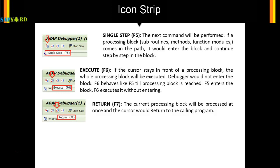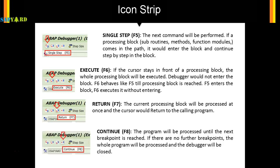F7 — Return: the current processing block is processed at once and the cursor returns to the calling program. If inside a subroutine, method, or function module, it exits back to the main program. F8 — Continue: the program runs until the next breakpoint is reached. If there are no further breakpoints, the whole program is processed and the debugger is closed.